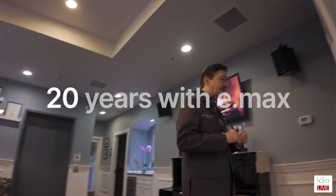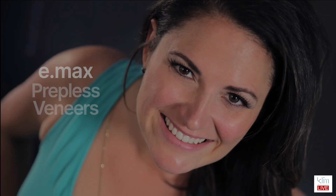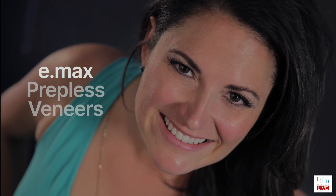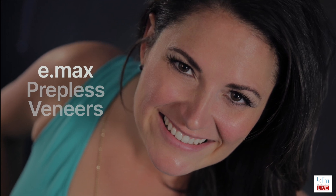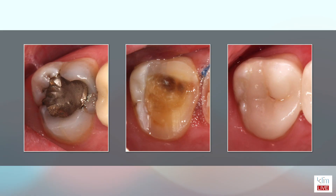Why has Emacs been so important to me? Number one, it's a support ceramic that allows me to be minimally invasive. I love conservation — I love to keep nature, keep that tooth. With Emacs, it's a material that's robust that allows me to do conservative onlays, conservative veneers, without having to do a lot of prepping.